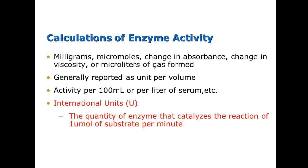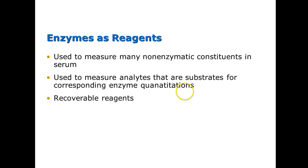We calculate enzyme activity differently than other test types. The first test you did was probably something like albumin, measured in grams per deciliter — but we are not looking at a quantity of enzyme. We're looking at the activity of the enzyme, measured in international units: the quantity of enzyme that will catalyze the reaction of one micromole of substrate per minute. We can also use enzymes as reagents — most reagents have enzymes in them to drive the reaction to create the color read by the spectrophotometer. So enzymes are used to measure many non-enzymatic constituents in serum, like glucose and albumin.